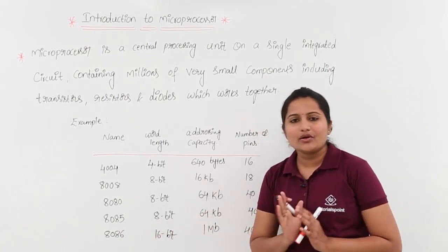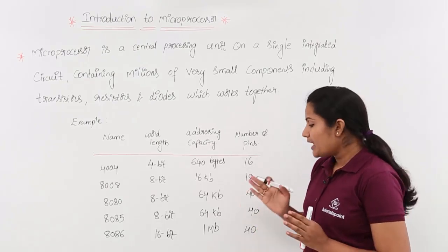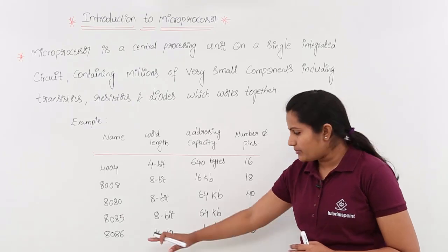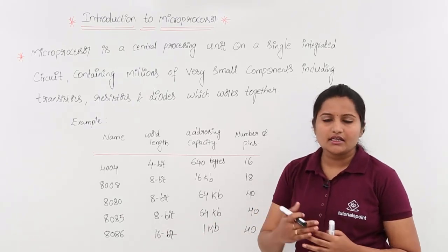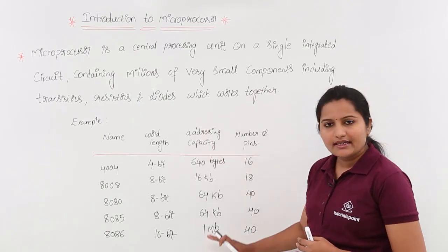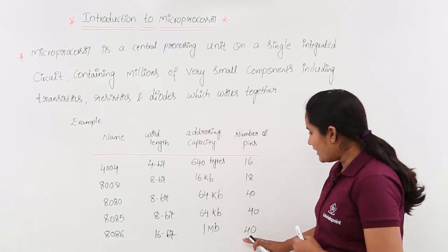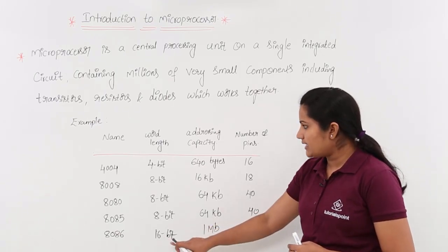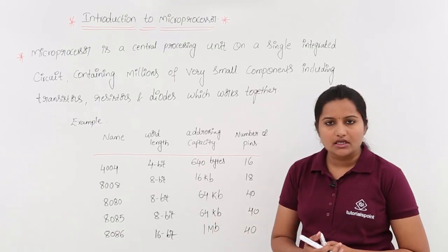Here we are having 8086 microprocessor in which the word length is increased from 8 bits to 16 bits. From this onwards, our word length is increased to 8 bits to 16 bits. For this, the addressing capacity is 1 MB, and here the pins are same with same 40 pins. Here word length is increased and addressing capacity is increased.